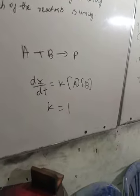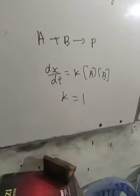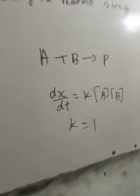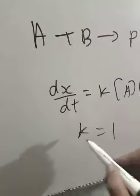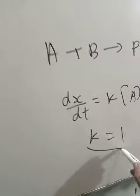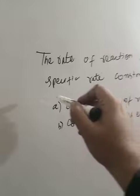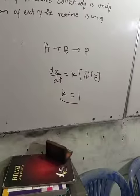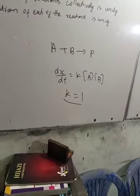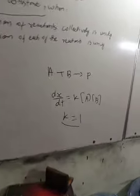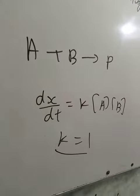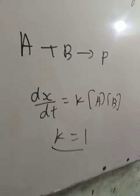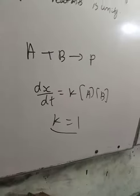Now the rate constant is the K value. But if the K value is 1, then it is called the specific rate constant. So when K equals 1, that is the specific rate constant.